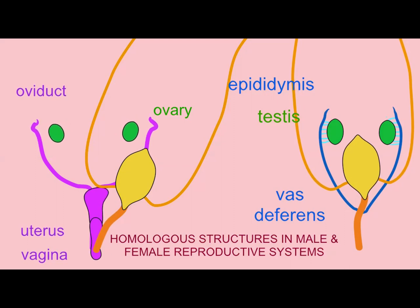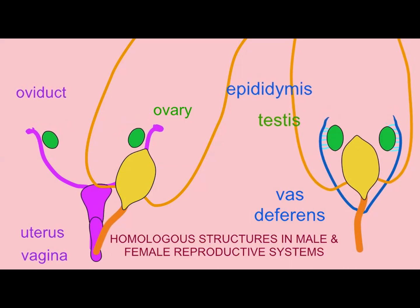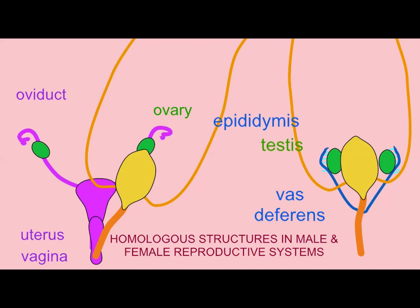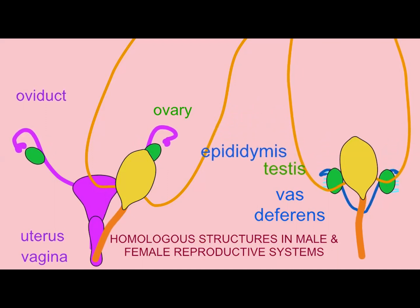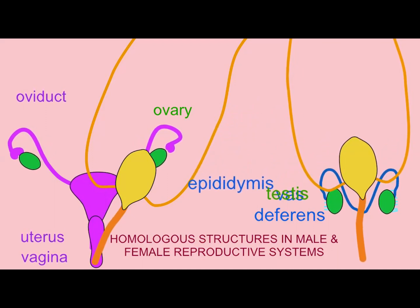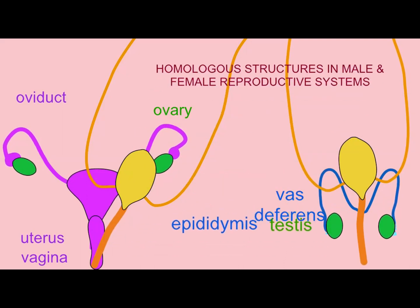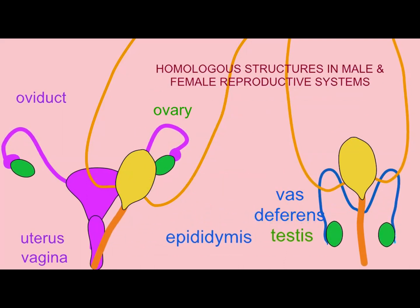There are ducts which form in male fetuses which need to degenerate — the Mullerian ducts — because they are appropriate in females. There are ducts which develop in female fetuses, the Wolfian ducts, which will also need to degenerate. Thus, male and female fetuses have the ability to express many of the genes and produce many of the structures which are more typical of the opposite gender.